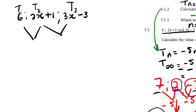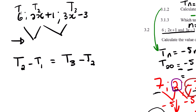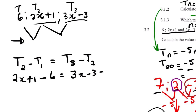So t1 is 6, t2 is 2x plus 1, and t3 is 3x minus 3. Since this is a linear pattern, the common difference must be equal throughout. That means t2 minus t1 equals t3 minus t2. We can generate the equation: 2x plus 1 minus 6 equals 3x minus 3 minus (2x plus 1), using brackets since t2 has more than one term.